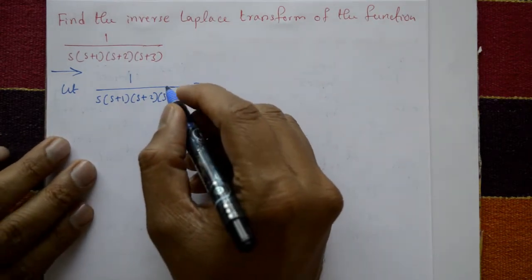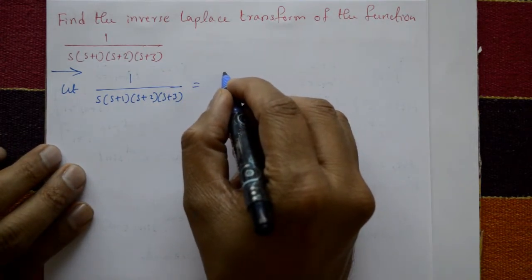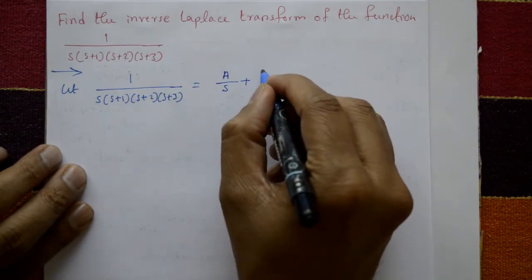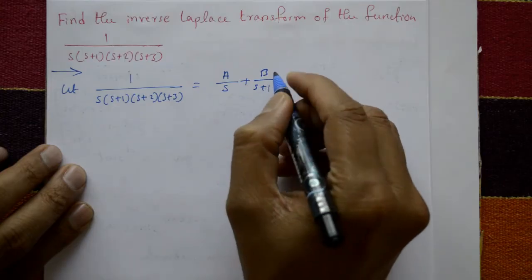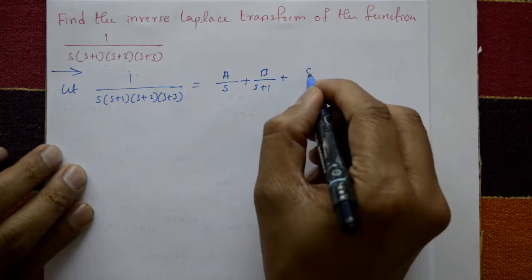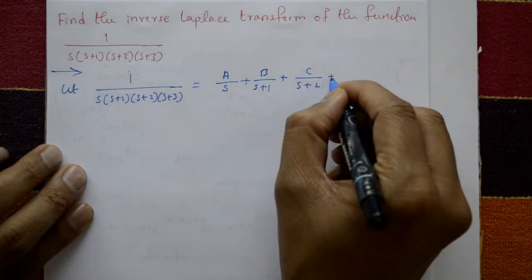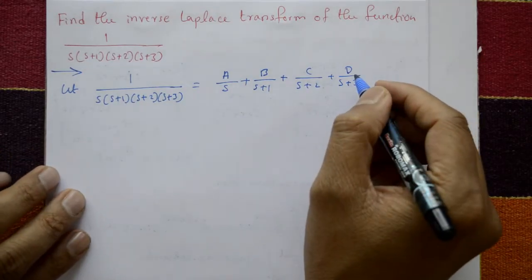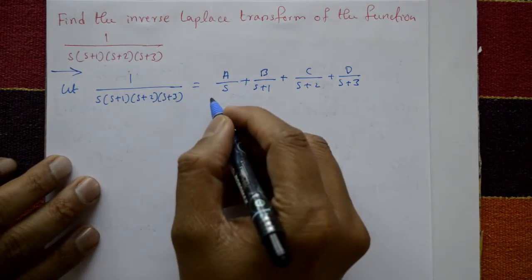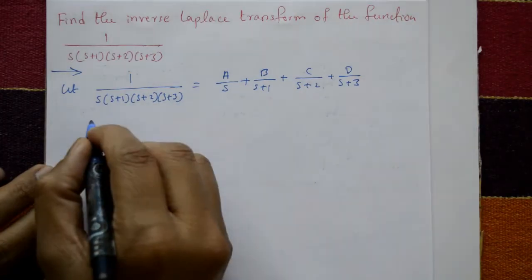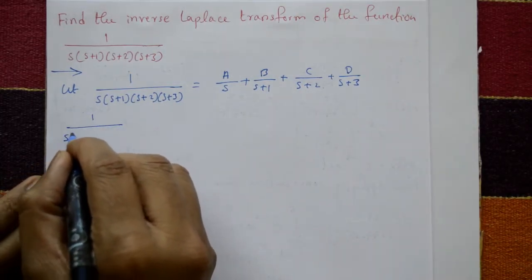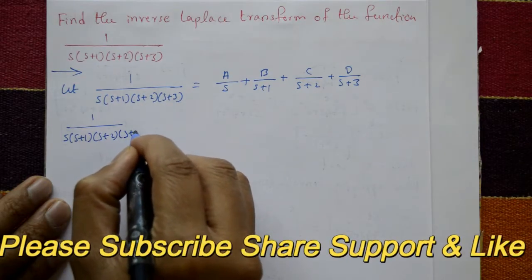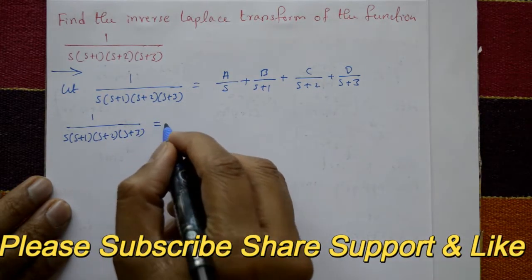This is a proper fraction, so we decompose it as A upon s plus B upon s plus 1 plus C upon s plus 2 plus D upon s plus 3. Taking the common denominator, the left side is 1 upon s into s plus 1 into s plus 2 into s plus 3.